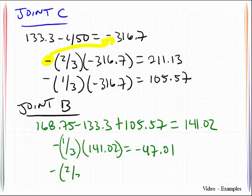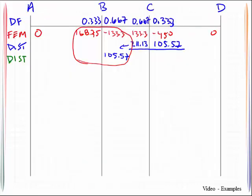And for the two-thirds, that will be negative 94.01. Let me carry that over back here to the table. So negative 47.01, negative 94.01. I will do a carryover here, negative 47.01.